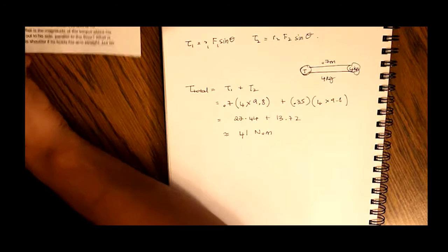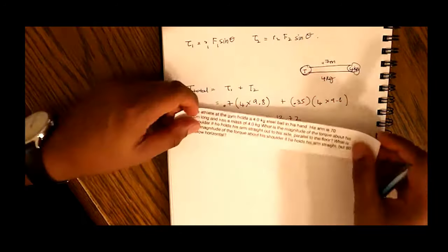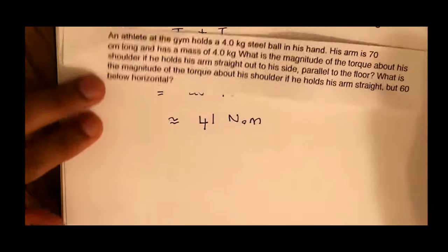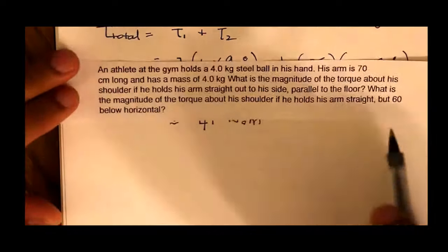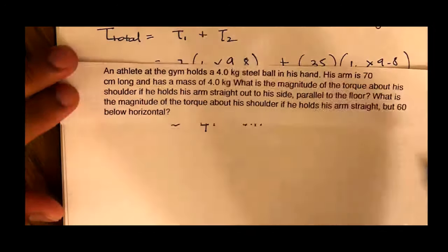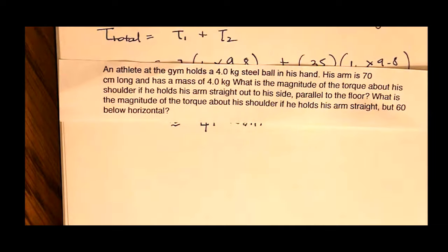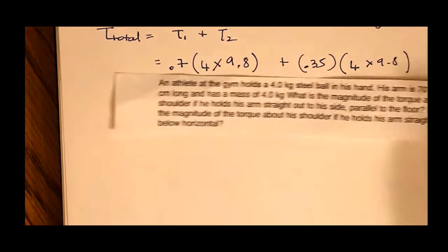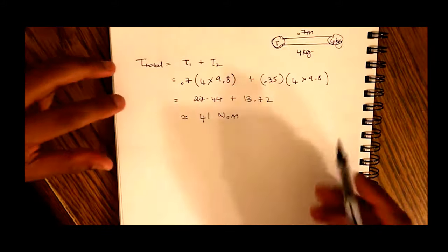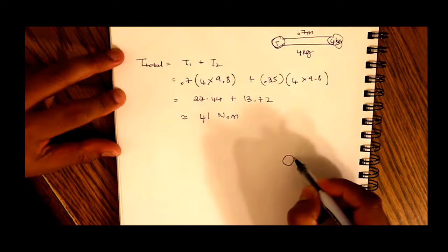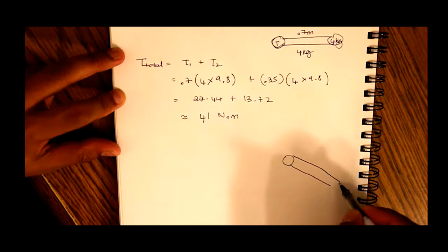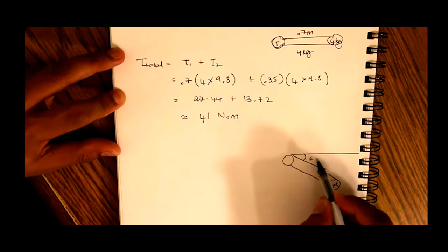But the next part of the question asks us, let me zoom in here for you. What is the magnitude of torque about his shoulder if he holds his arm, not straight, but 60 degrees below the horizontal? So he's holding his arm, so his shoulder is here, and the ball is here, 4 kilograms. And this is the horizontal, and this is 60 degrees.